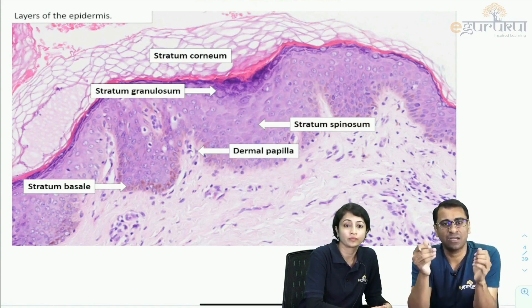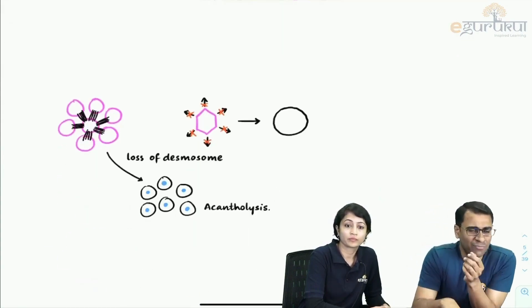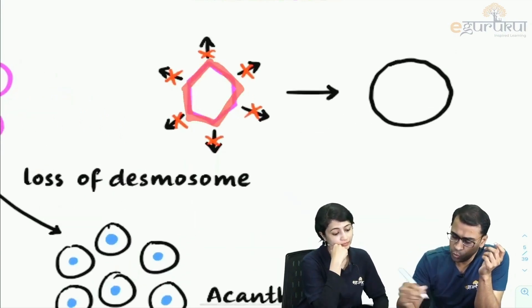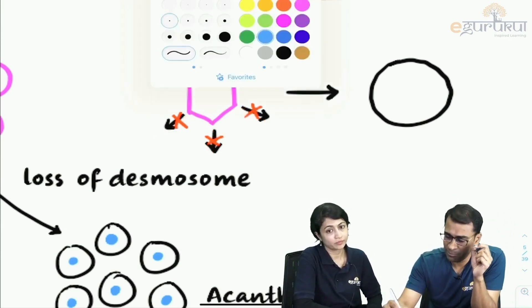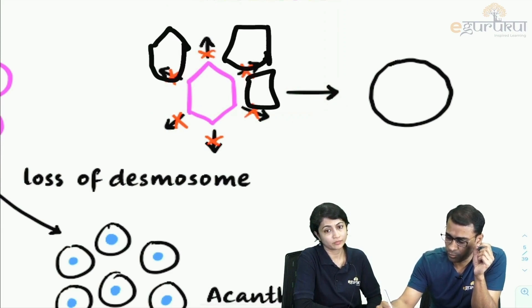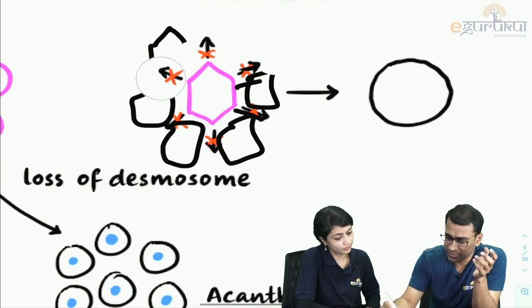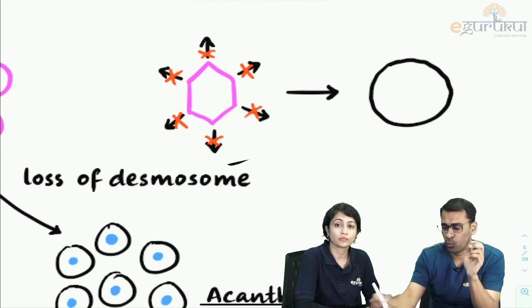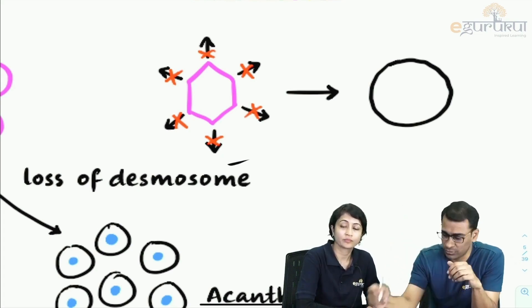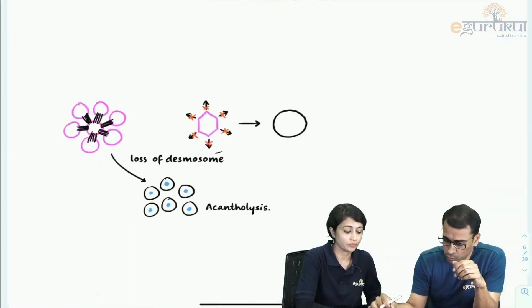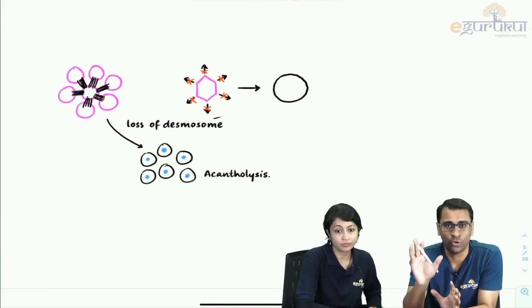A cadherin is essentially a desmosome — a protein of the desmosome that holds cells together. Imagine an epidermal cell being pulled in all directions by neighboring cells via these junctions — the spinous processes. If the spinous processes are lost, the pulling effect disappears and the cell becomes round. This round cell is called an acantholytic cell. This process is called acantholysis — the loss of desmosomes or cadherins — and the cadherins are made of proteins called desmogleins, which are the key players in today's discussion.